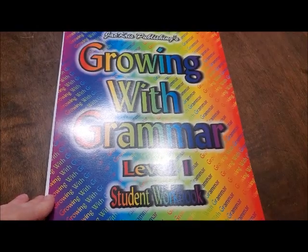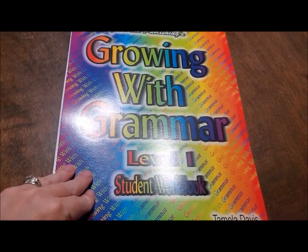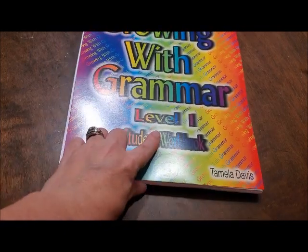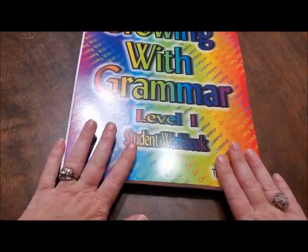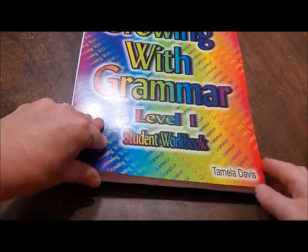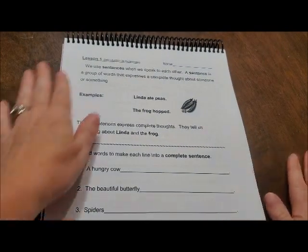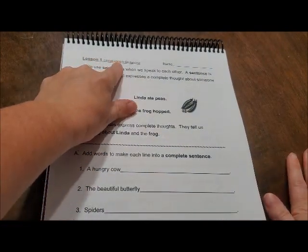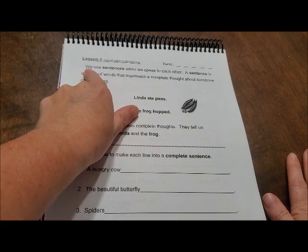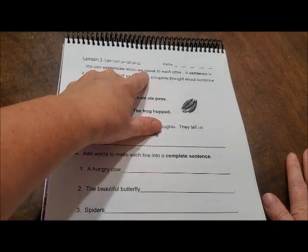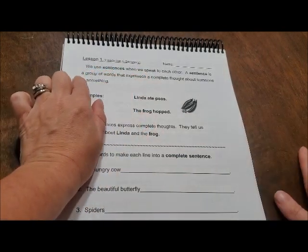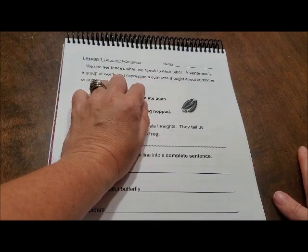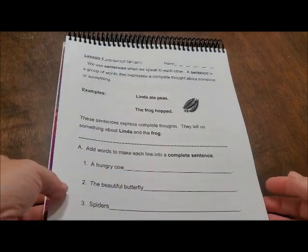In today's video, we are going to do a lesson with us, Growing with Grammar, level 1. So, all you need is the student book for that. And it also comes with an answer key. So, we're going to flip over to lesson 1. Alright, and I'm going to show it to you. And then I'll let Becca work on it. It's lesson 1, Introduction to Sentences. Alright, it says, we use a sentence when we speak to each other. A sentence is a group of words that expresses a complete thought about someone or something.